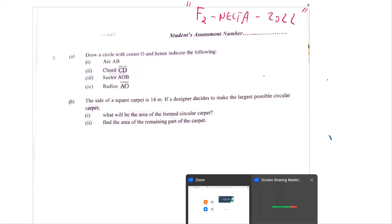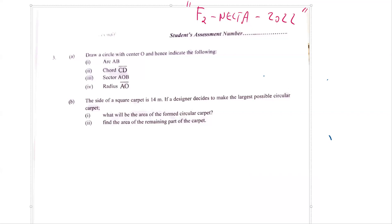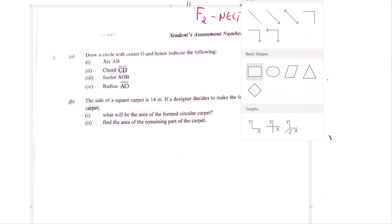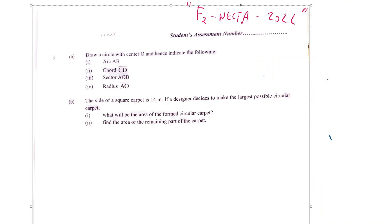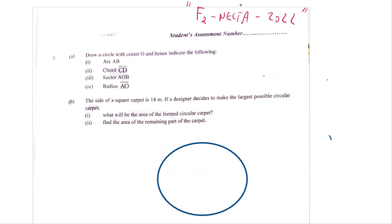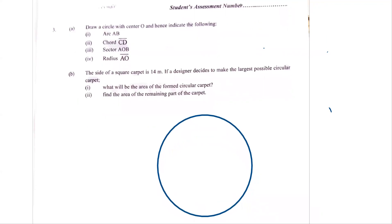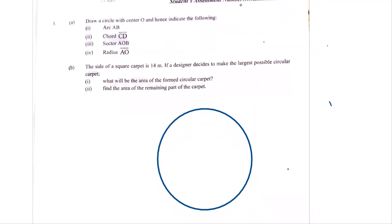With question number three here, students, as you can see, question number three says: draw a circle with a center O, indicating the following. So we're supposed to draw a circle. This is our circle, and this is our center O here. So I can call it center O.